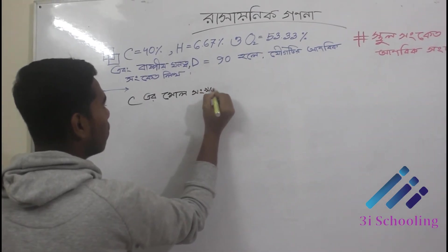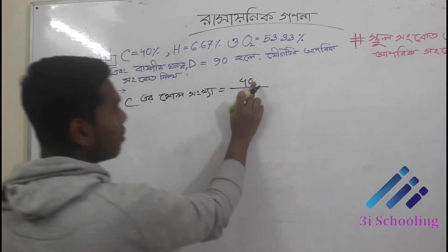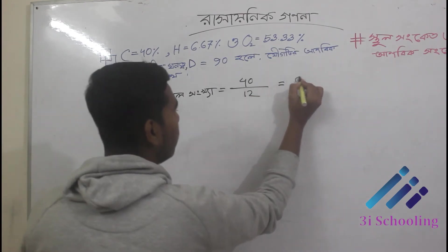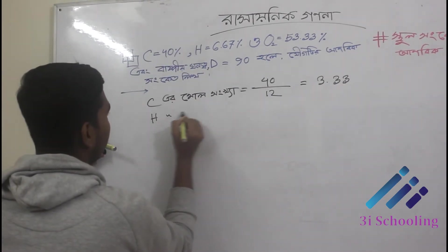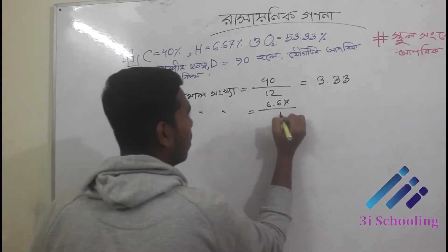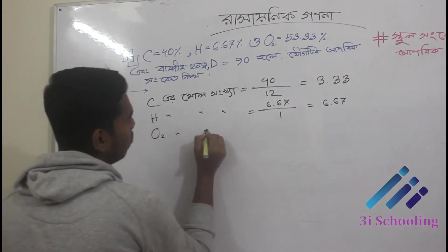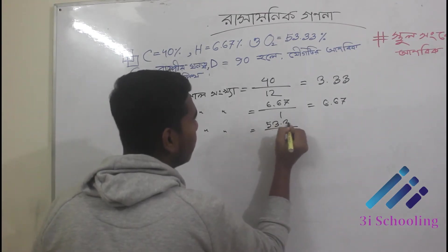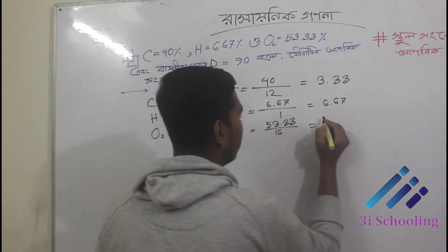The total atomic mass of carbon is 12. The total atomic mass of carbon is 12 — so 6.67 divided by 1 for hydrogen. Oxygen: 53.33 divided by 16.